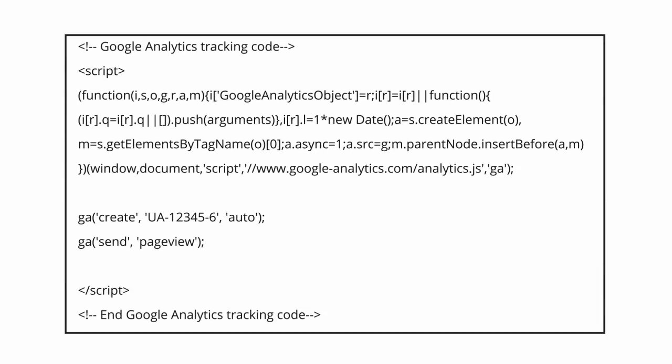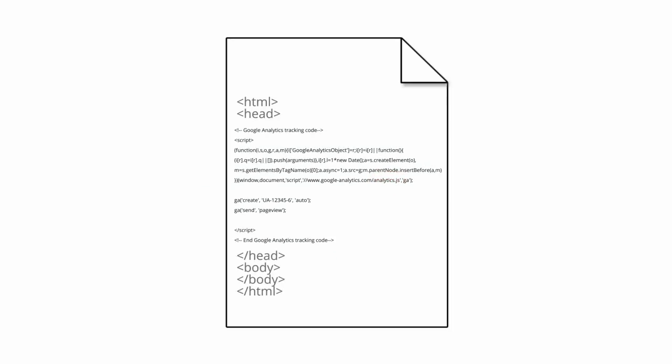To track data from a website, Google Analytics provides a standard snippet of JavaScript tracking code. This snippet references a JavaScript library called analytics.js that controls what data is collected. You simply add the standard code snippet before the closing head tag in the HTML of every web page that you want to track.